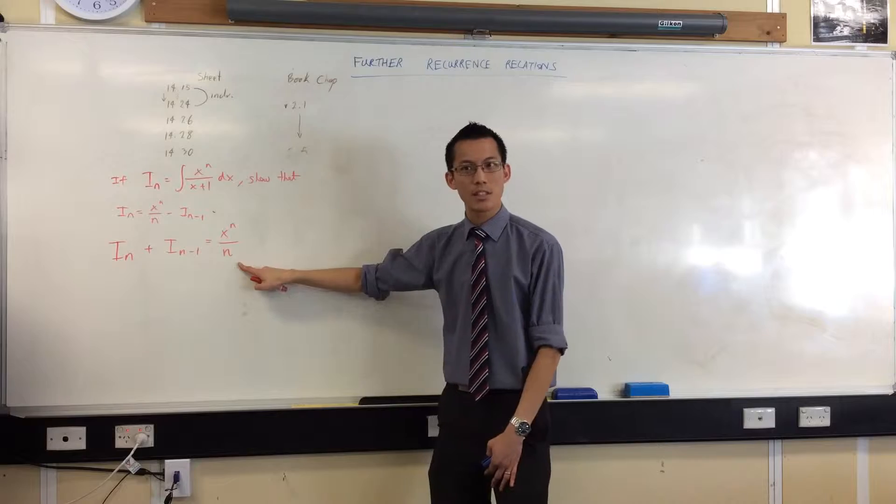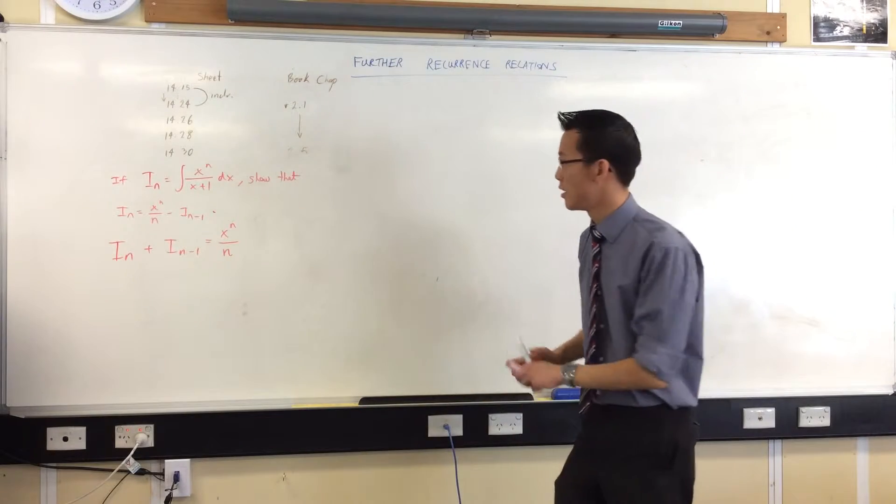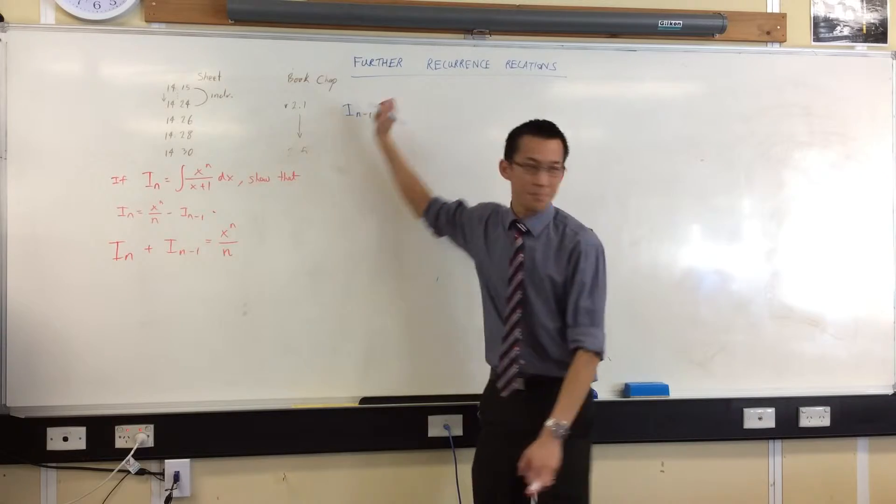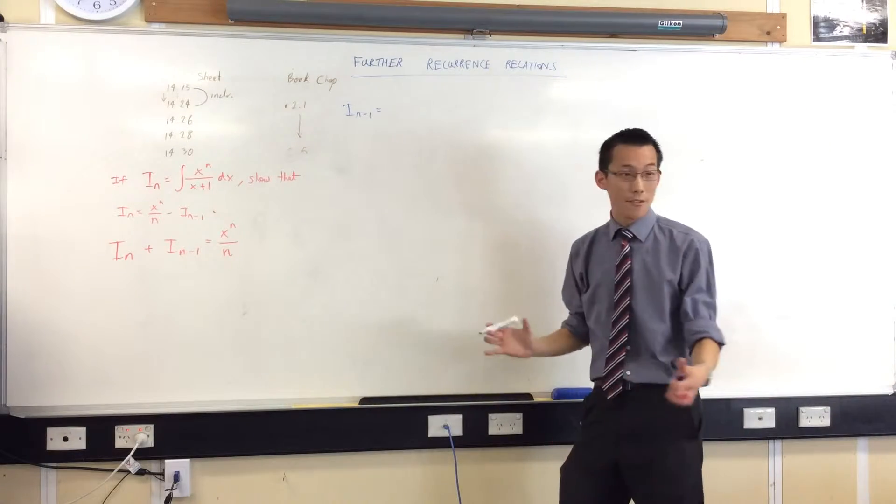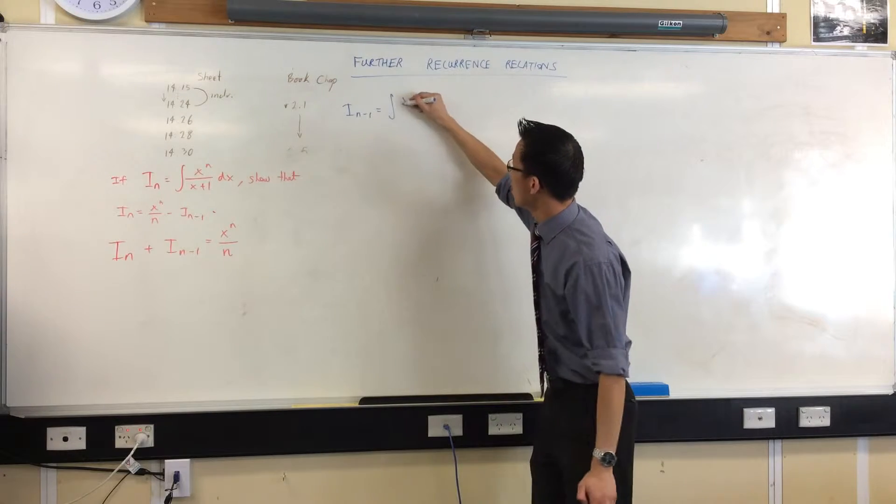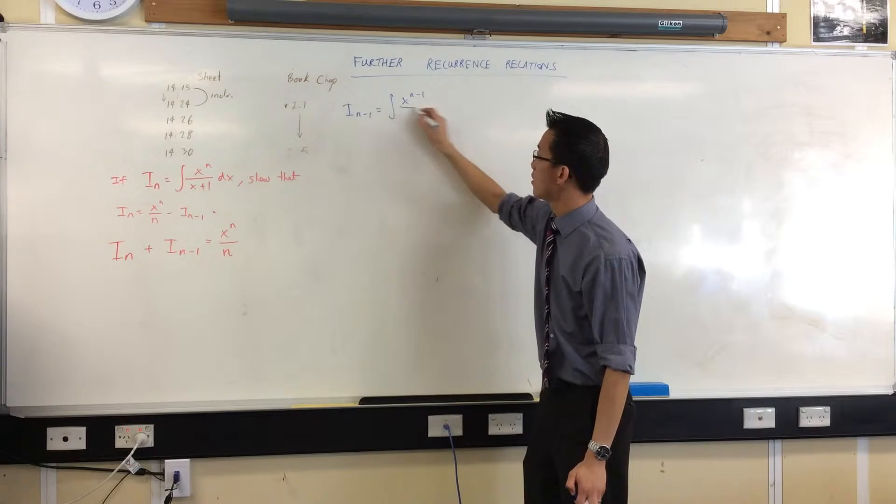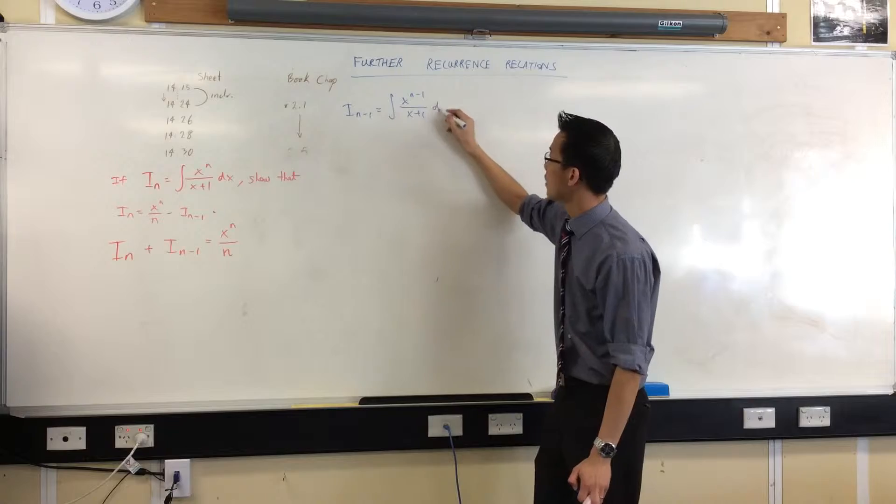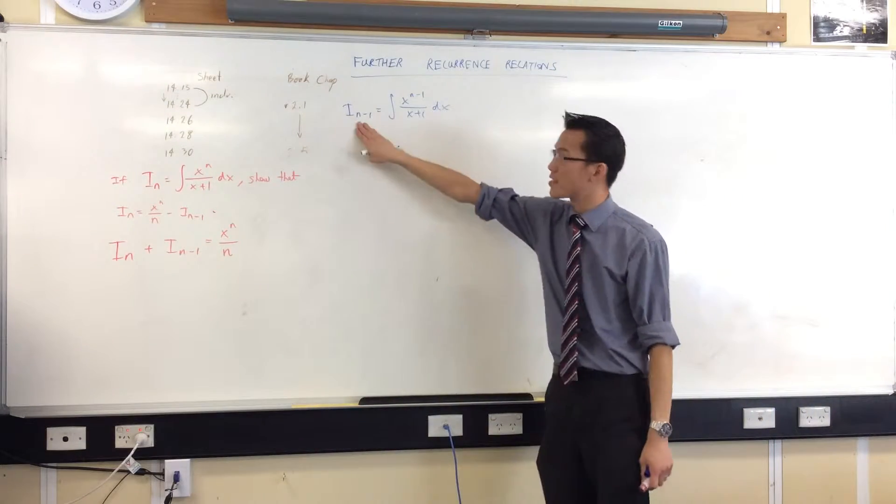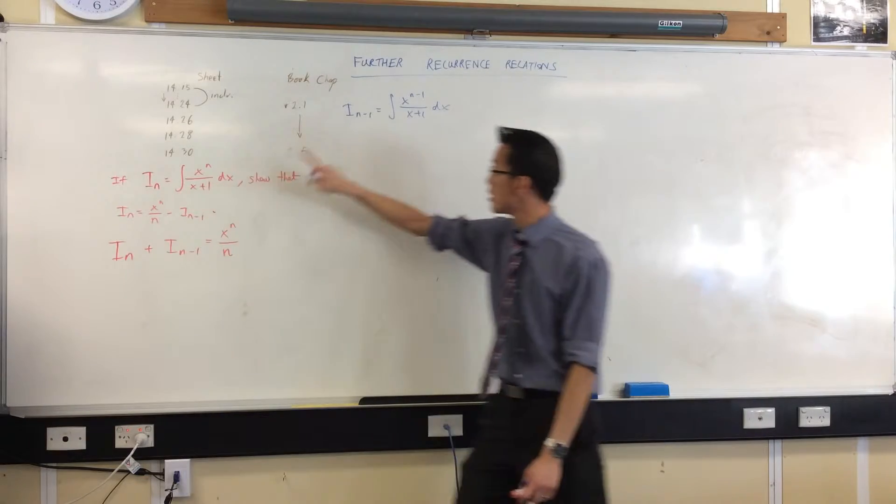It turns out to be something simple, so let's give it a go. If I say i_{n-1}, where does the n fit in? It's just in this power. So I've got the integral of x^{n-1} over (x+1). Now, if I add this to my original integral,